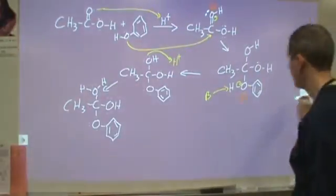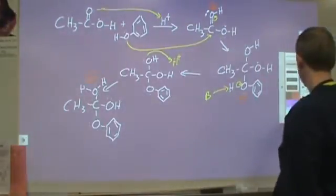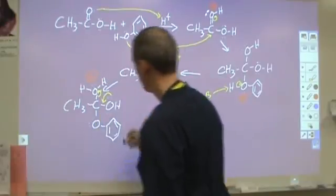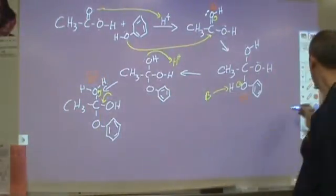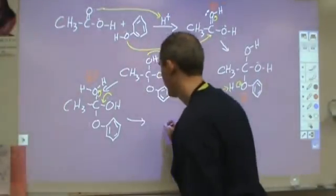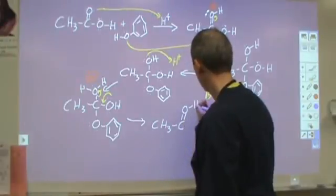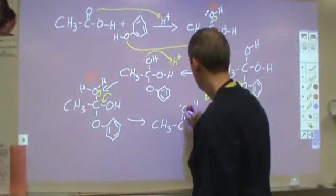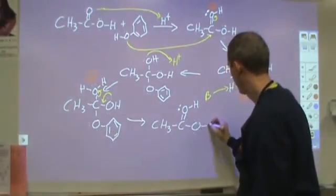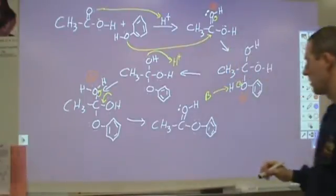Now we have our positive charge back on here, and that makes that a much better leaving group. At that point, this can just leave and then these electrons will come in and form that double bond again. That sets us up to be very close to our product. Now we'll have CH3, C double bond O with an H attached still, and then we will have our benzene ring attached here.